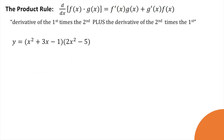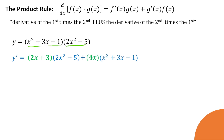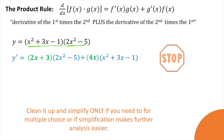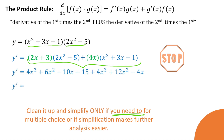Let's try another one. We've got two functions being multiplied together, so we'll take the derivative of the first, which would be 2x plus 3, multiply that times the second, plus the derivative of the second function, which is 4x, times the first. Stop — this is the derivative. You only clean it up and simplify if you need to, for a multiple choice question, or if simplification makes further analysis easier. So just for the fun of it, let's expand this and combine like terms.